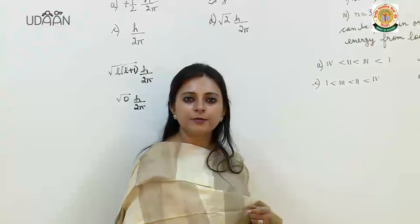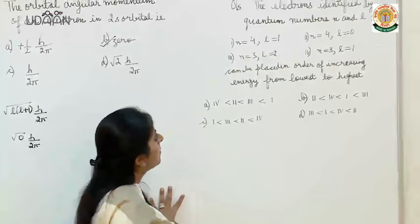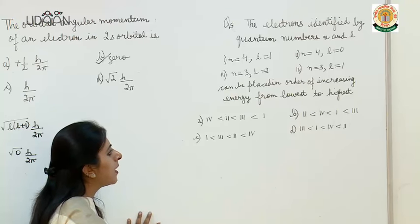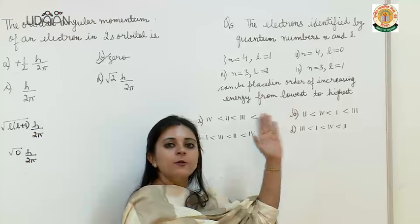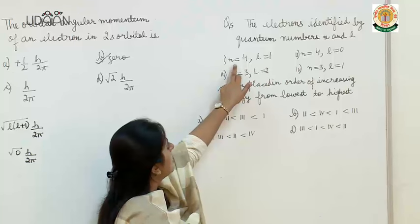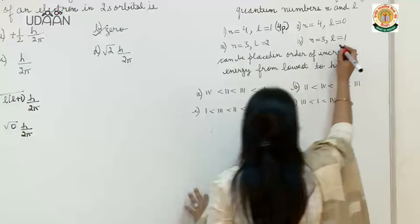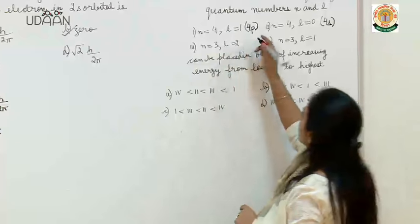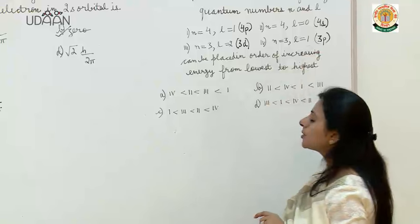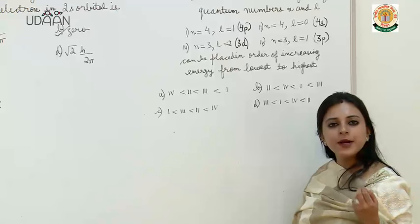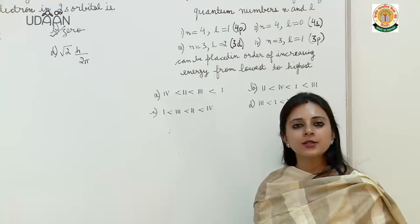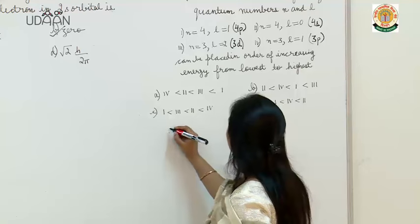Question number 5: the electrons identified by quantum numbers n and l can be placed in order of increasing energy from lowest to highest. We need to identify which orbital each quantum number set corresponds to. These are: 4p orbital, 4s orbital, 3d orbital, and 3p orbital. According to the Aufbau principle, the orbital with smaller n+l has lower energy, so the electron fills that first. Let us calculate n+l for each: for 4p it is 5; for 4s it is 4; for 3d it is 5; for 3p it is 4.